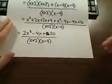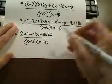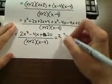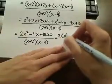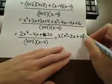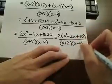Okay, that numerator definitely factors, so we need to factor that and see if we can get anything to cancel with the bottom. So the first thing I'm going to do is pull out a 2, and when we pull that out we are left with x squared minus 2x and plus 10 over the x plus 2 and the x minus 4.